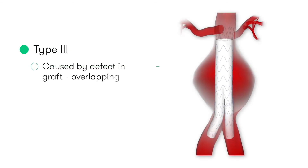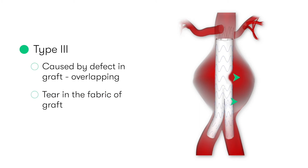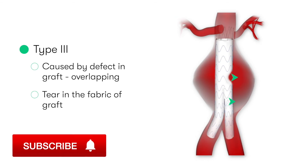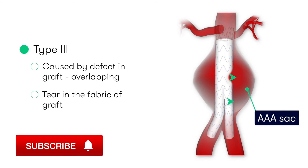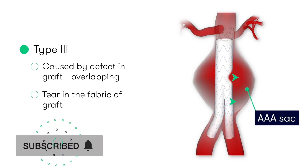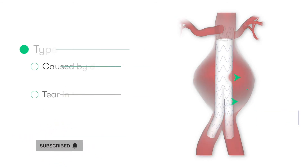Type 3 endoleaks describe when a defect — for example, an inadequately sealed overlapping part of a graft or a tear in the fabric of the graft — leads to leakage from within the lumen of the vessel into the adjacent aneurysm sac.